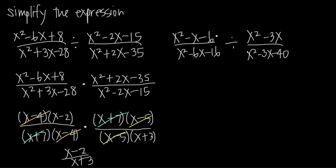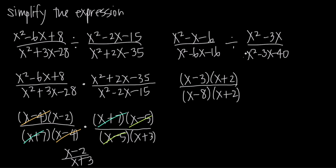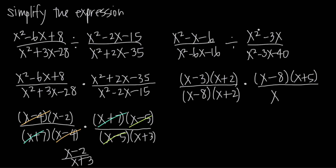Let's do another example. We have x squared minus x minus 6, which factors as (x minus 3)(x plus 2). In the denominator, x squared minus 6x minus 16 factors as (x minus 8)(x plus 2). Instead of dividing, we're going to multiply and flip the second fraction upside down. So x squared minus 3x minus 40 moves into the numerator and factors as (x minus 8)(x plus 5). The denominator x squared minus 3x isn't a trinomial, but we can factor out an x, giving us x times (x minus 3).